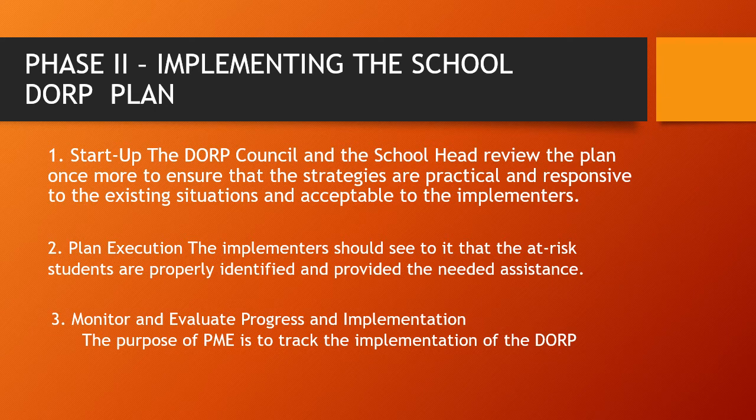Number one, start up: the DORP council and the school head review the plan once more to ensure that the strategies are practical and responsive to existing situations and acceptable to the implementers. Number two, plan execution: the implementers should see to it that at-risk students are properly identified and provided the needed assistance. Number three, monitor and evaluate progress and implementation — the purpose of M&E is to track the implementation of the DORP program.